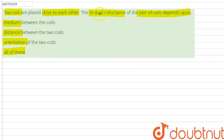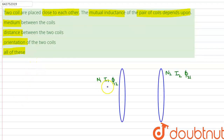The question has given us some statements about mutual inductance and is asking which one of these it depends on. To answer this question, we need to draw a diagram. The coupled flux of a two-coil system is used to define the mutual inductance between the coils.